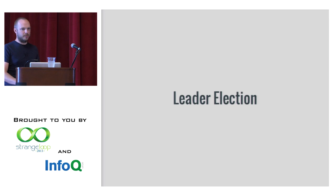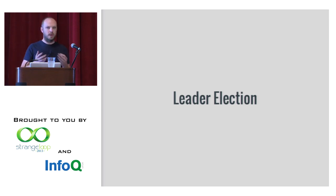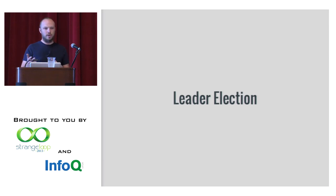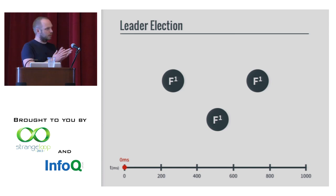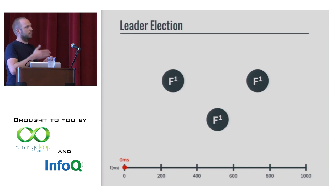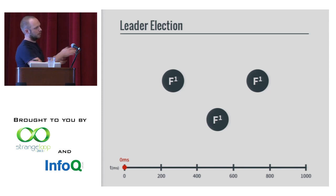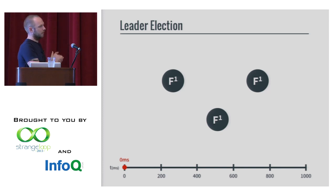There are really two pieces to Raft: leader election — how you figure out who's going to make changes to the system — and log replication. In the leader election, let's step through how it works. At the bottom you can see a timeline; the whole thing is one second and we're just going to use a fraction of that. On the top we have three nodes. 'F' means follower, and the '1' is the term — the current election term.